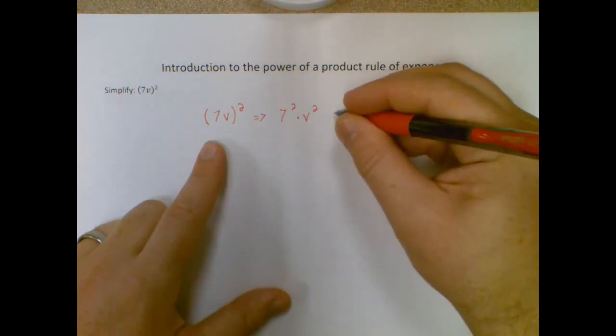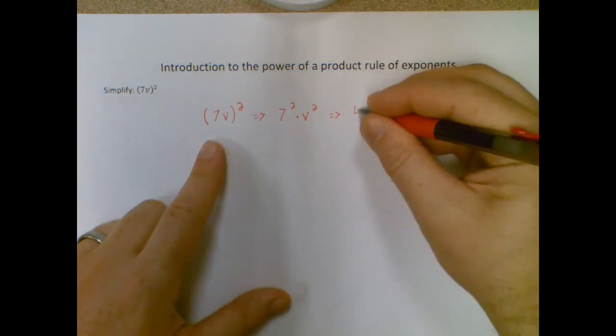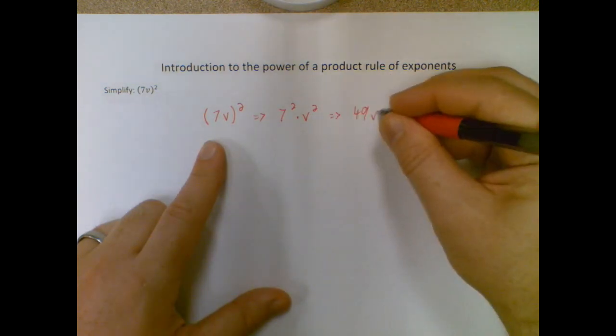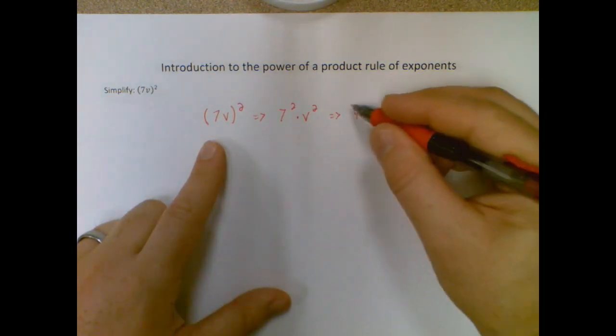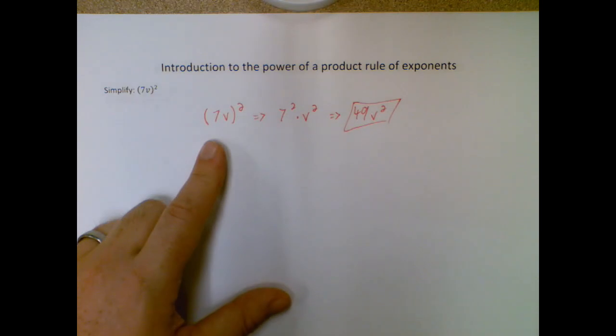Okay, so all I need to do is simplify that. 7^2 is 49. V^2 doesn't really reduce, so it stays 49v^2. And that's it.